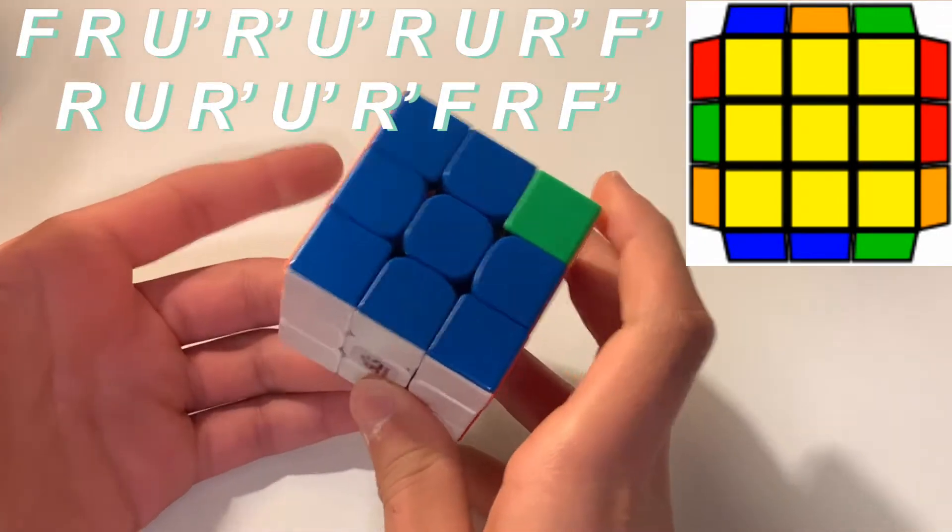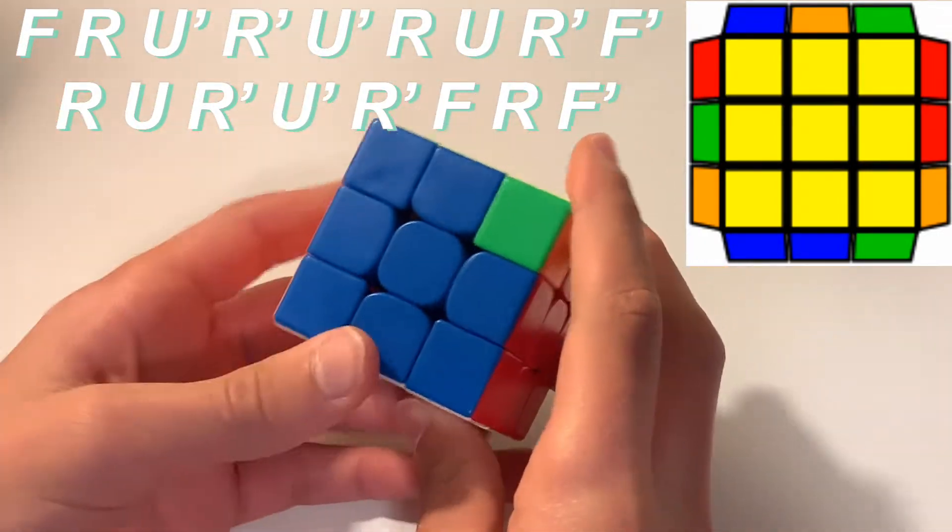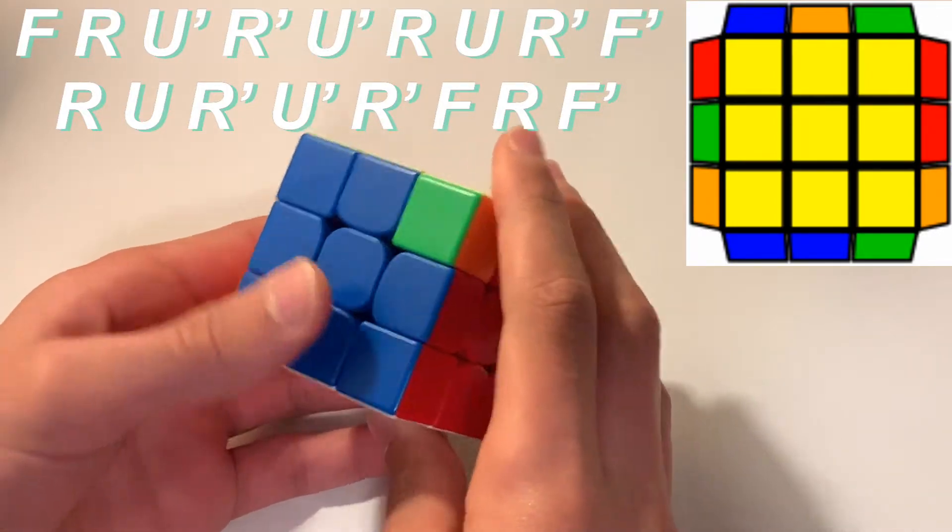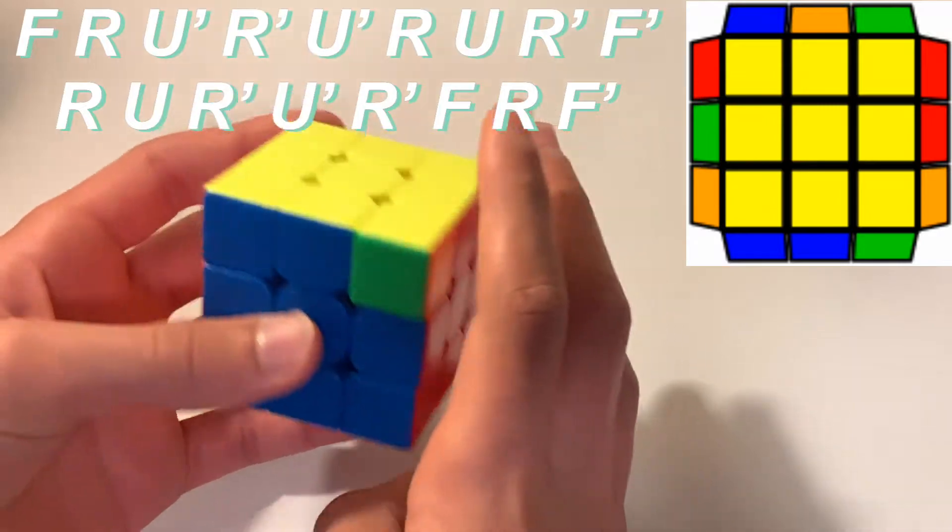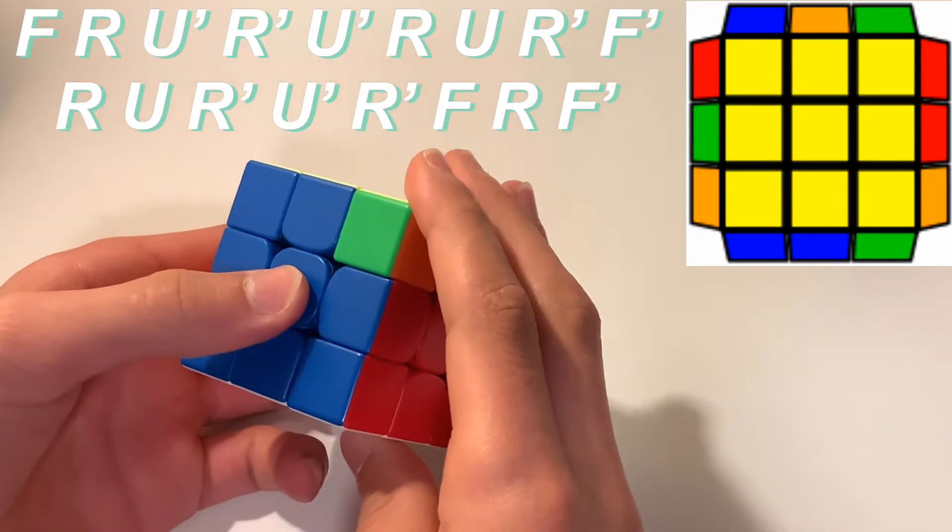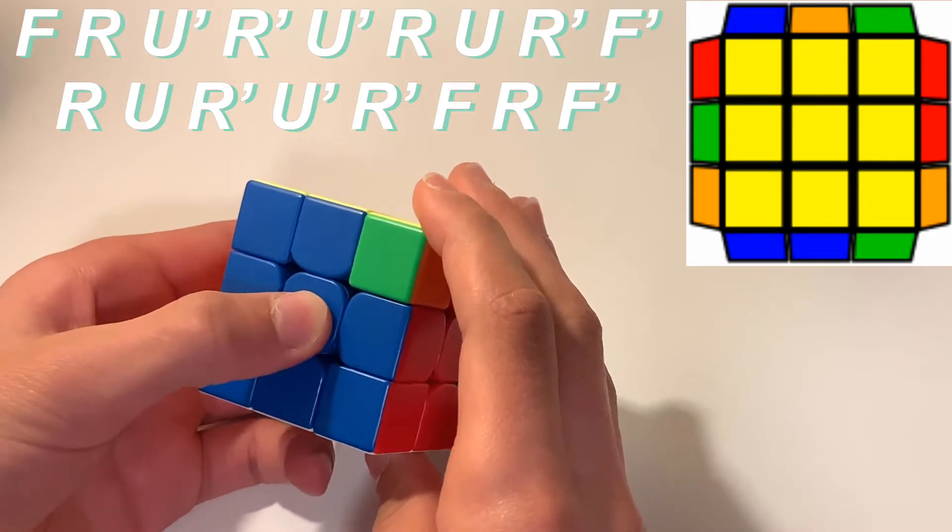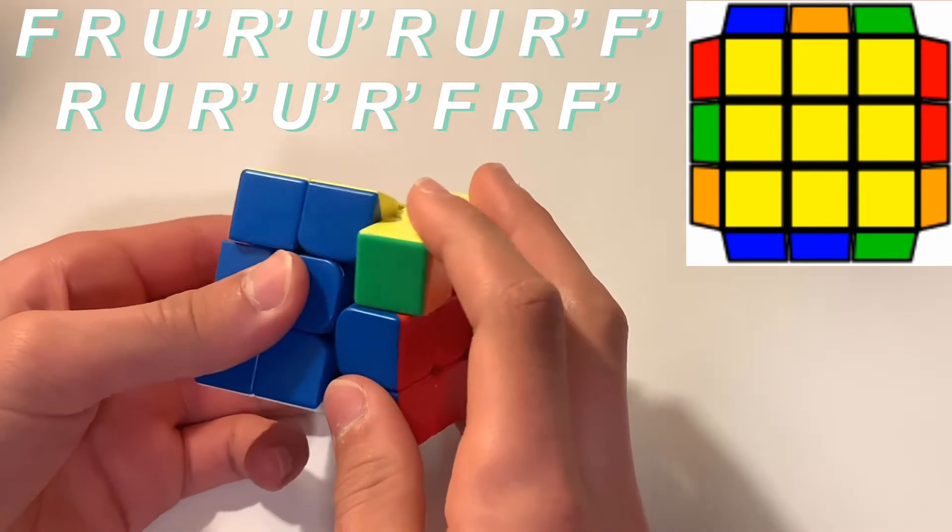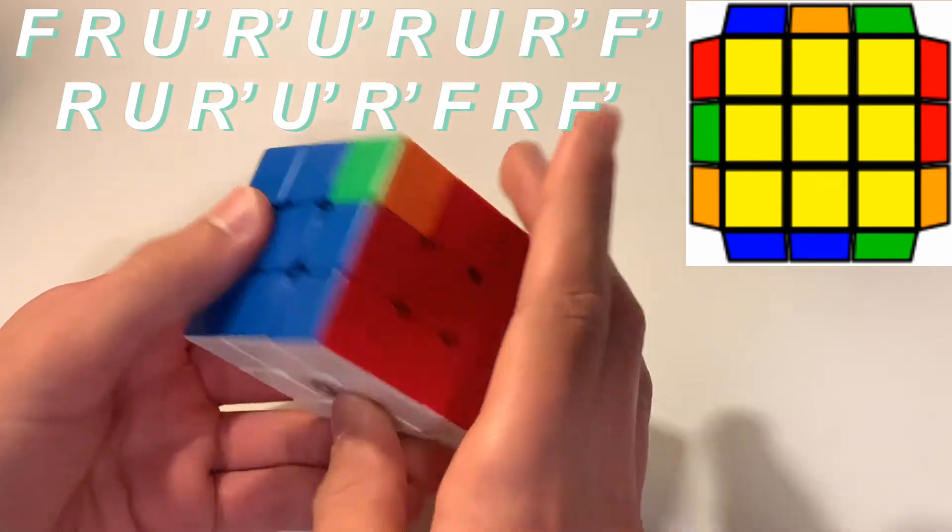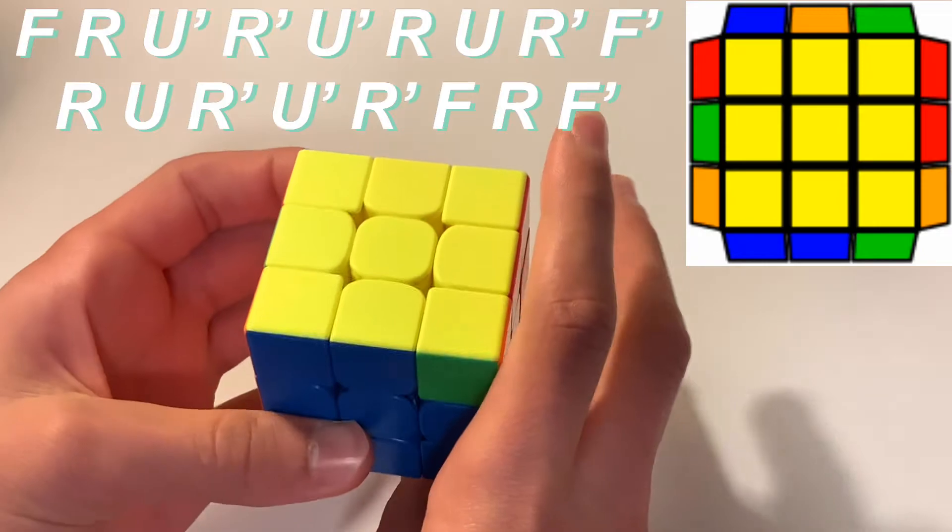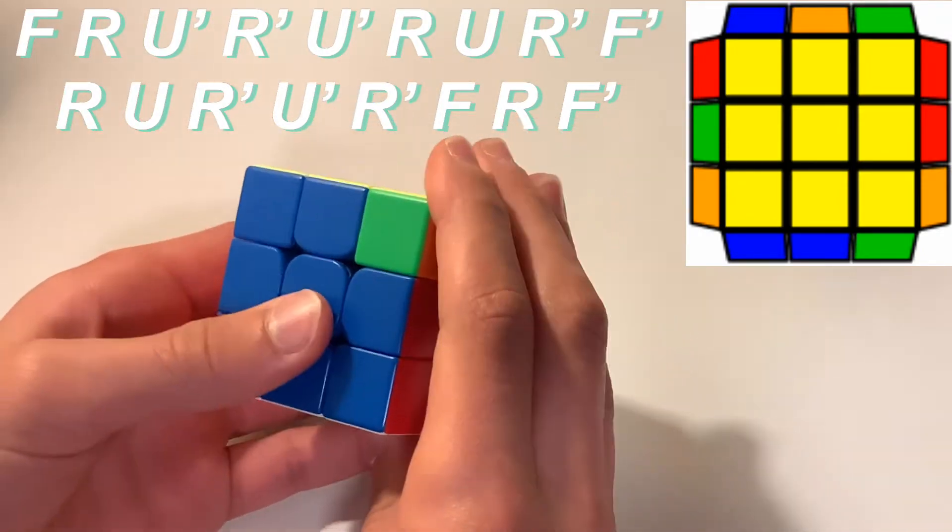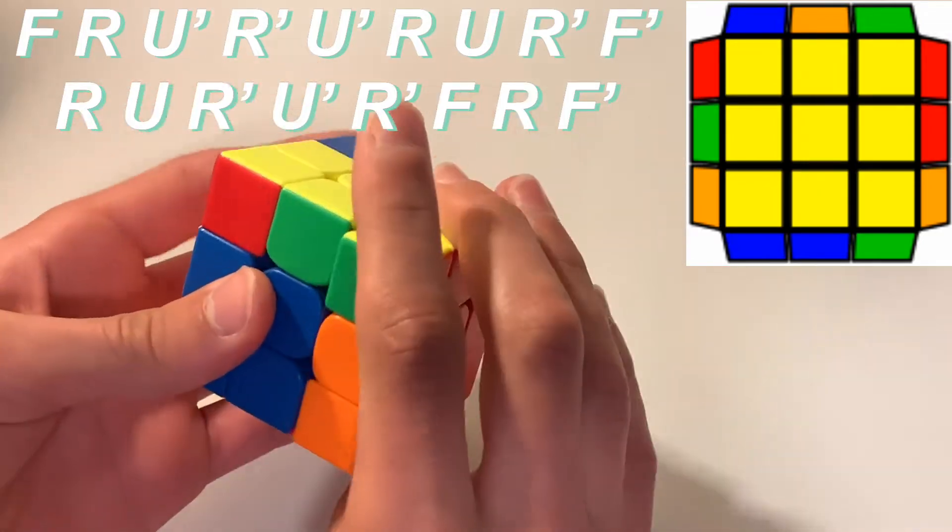So the Y perm isn't terribly slow, but it's definitely not very fast either because it's just two combined algorithms and it swaps diagonal corners. But some people can do it very fast. And why it's important is because if you don't do it fast, then it will make your times go down a lot. But there isn't really any finger tricks that aren't standard. So most of these finger tricks are very easy to memorize on the Y perm. And they're very standard also when you do your F moves.